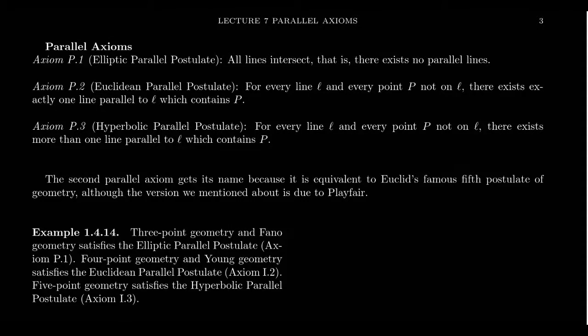When looking at the axioms of Fano and Young geometry, we see they differ in only one axiom — what we call Axiom 5 for those two geometries — which states something about the existence of parallel lines.